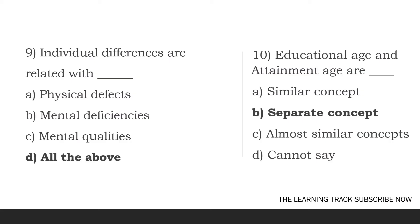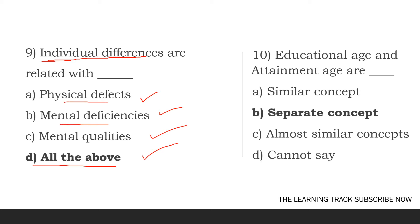Individual differences are related with dash. The options are physical defects, mental deficiencies, mental qualities, all of the above. The answer is all of the above — physical defects, mental deficiencies, and mental qualities are all related to individual differences.